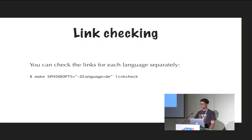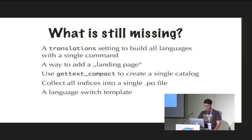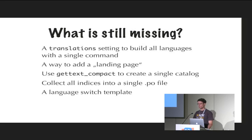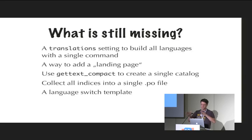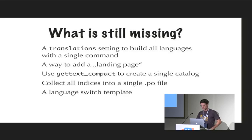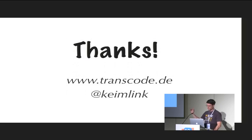For example, a translations setting is missing so that you can build all translations with one command. At the moment you have to execute all the steps for every single language, and if you have 50 languages there's a lot of work. You'd want a setting where you specify your original language and a translations list for other languages and can build all of them together. Another thing missing is a landing page for the HTML version where you refer to all the different languages. Another optimization could be using gettext_compact to create a single catalog. Thanks for listening — please ask a few questions.